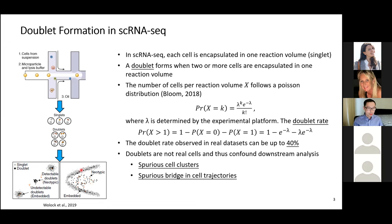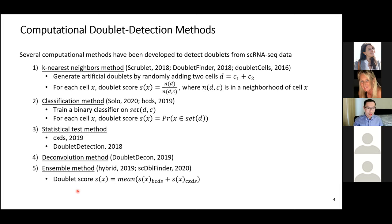This example illustrates the bias in cell trajectory analysis. Ideally we observe two trajectories in our sample, but due to the existence of doublets — which contain a combination of gene expression from two cells — we observe a bridge connecting the two branches, which falsely leads to the conclusion that there is actually a third branch. Therefore, removing doublets is very important.